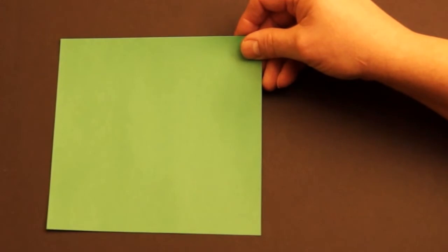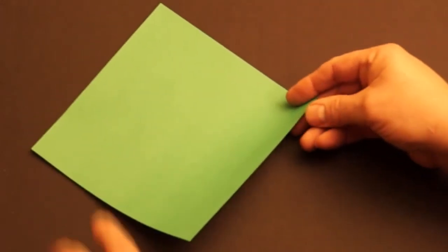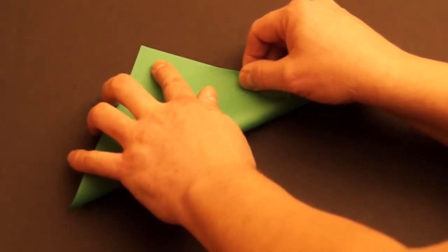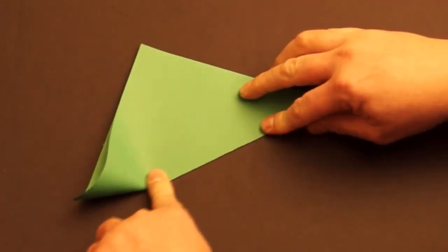It's time to make some art. First, we start with a square. Turn it like a diamond and fold the bottom to the top. Line up the corners as best you can. Press down good on your fold.